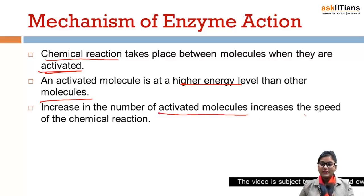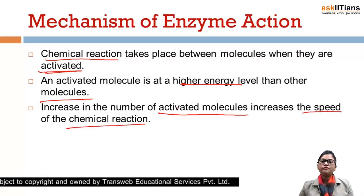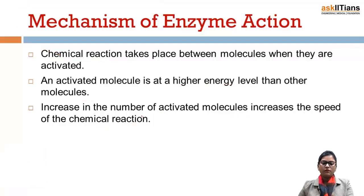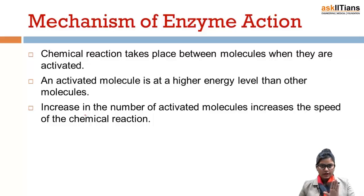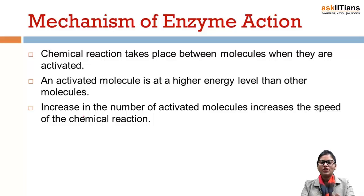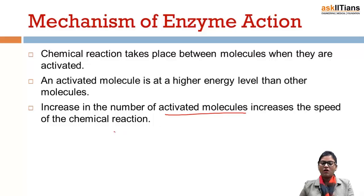Increasing the number of activated molecules increases the speed of the chemical reaction. For example, if we want to push our couch towards the wall and all of us are sleeping, suddenly I am awake and activated. I am pushing the couch towards the wall, but it is a very heavy couch and not moving with high speed. Suddenly one of my friends also wakes up and starts pushing, and the speed increases. Then one more friend wakes up and she also starts pushing the couch with me, so the couch moves towards the wall with even more speed. Exactly like this — increasing the number of activated molecules increases the speed of chemical reaction.